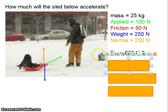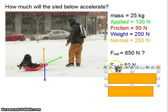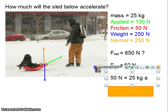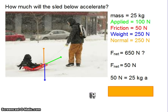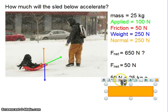If I add up 100 minus 50, I'm going to get there's an overall forward force of 50 Newtons. So if I put that in for F equals MA, I get 50 Newtons equals 25 kilograms times A. So then my A is 2 meters per second per second.